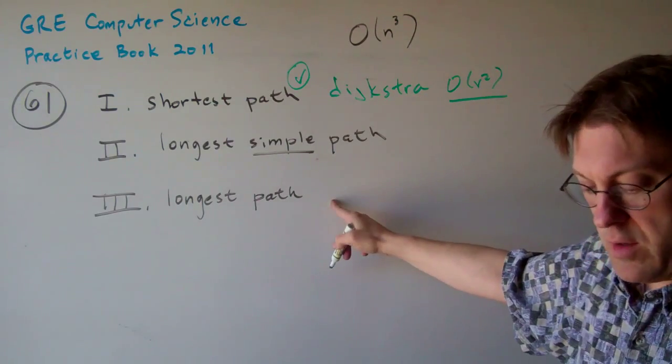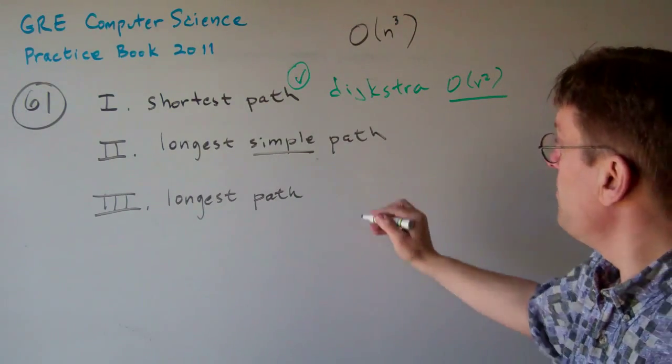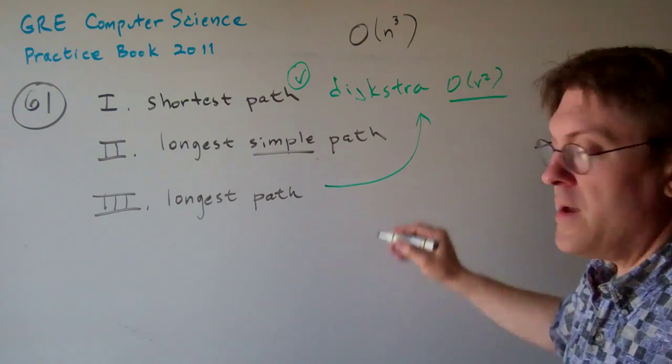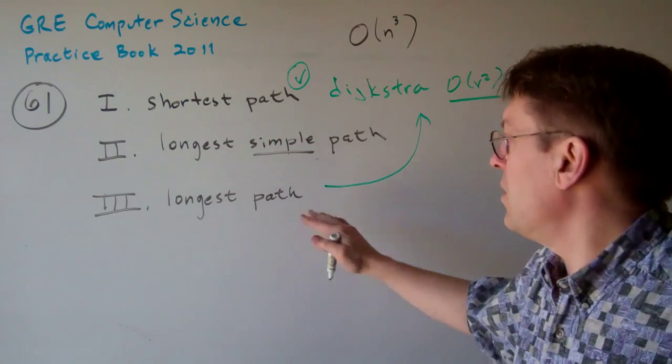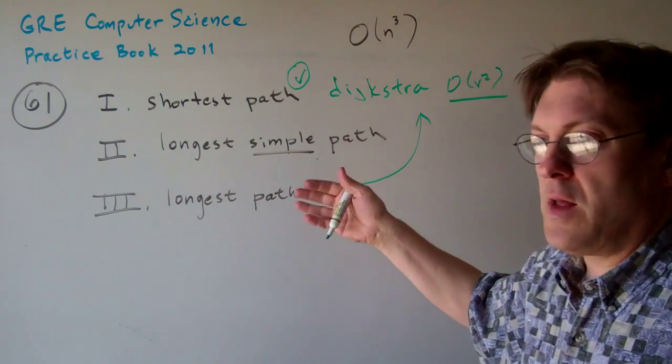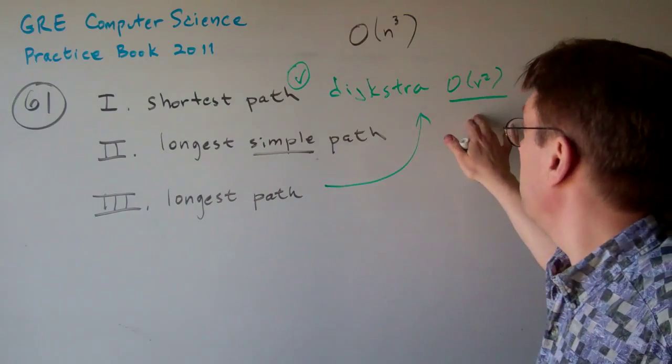The longest - well, let's go to the longest path. The longest path and the shortest path are basically the same problem. There's no difference between these two problems. So whether you find the longest or the shortest, you're still going to do the same O of v squared.